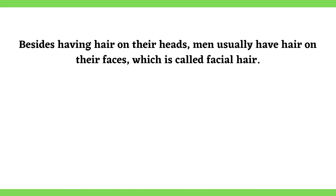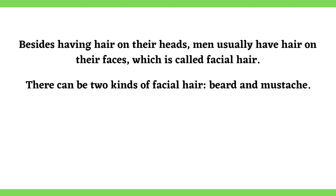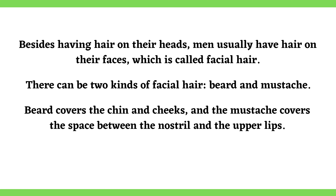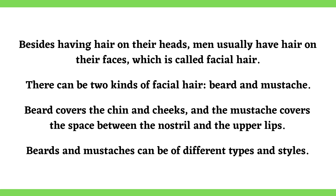How to describe facial hair: Besides having hair on their heads, men usually have hair on their faces, which is called facial hair. There can be two kinds of facial hair: beard and mustache. Beard covers the chin and cheeks, and the mustache covers the space between the nostril and the upper lips. Beards and mustaches can be of different types and styles. Now look at the table showing different types of beards and mustaches.